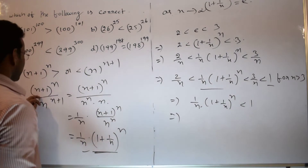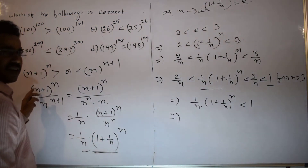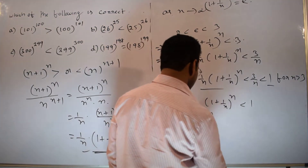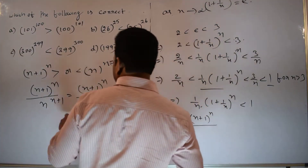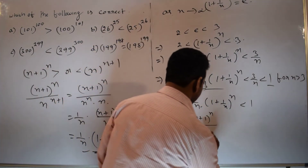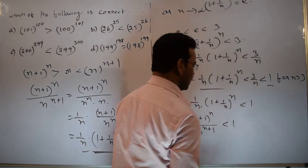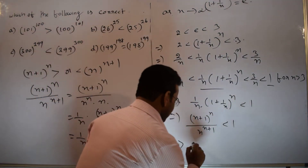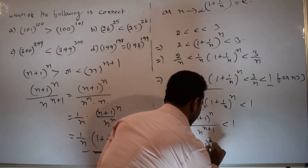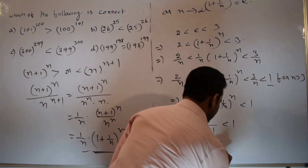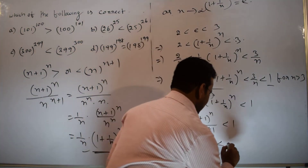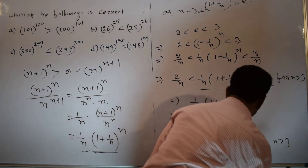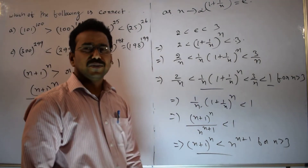Since (N+1)^N divided by N^(N+1) equals this expression which is less than 1, this implies (N+1)^N < N^(N+1) for N greater than 3. This is the final conclusion.